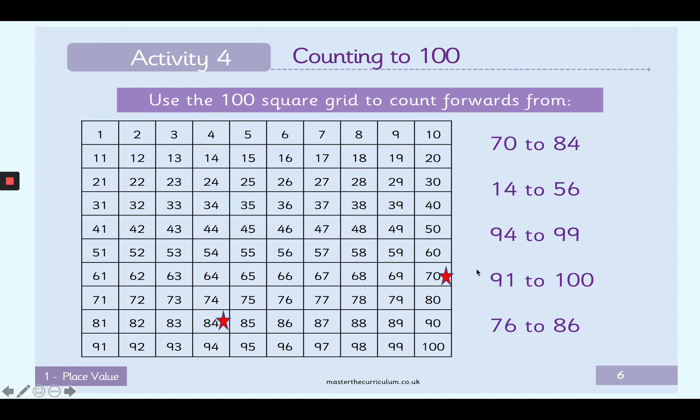Did any of you manage to find out how many numbers there are in between 70 and 84? Well done. There are 14. There's 14 in between 70 to 84.